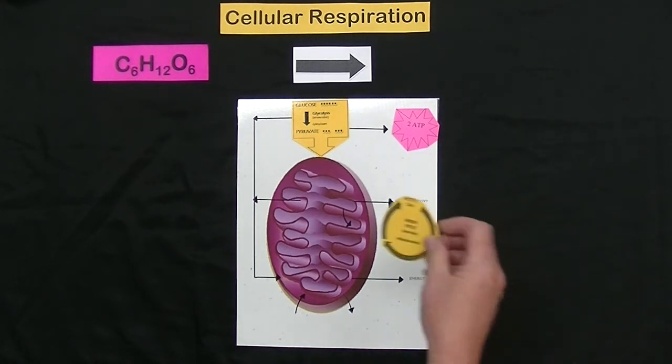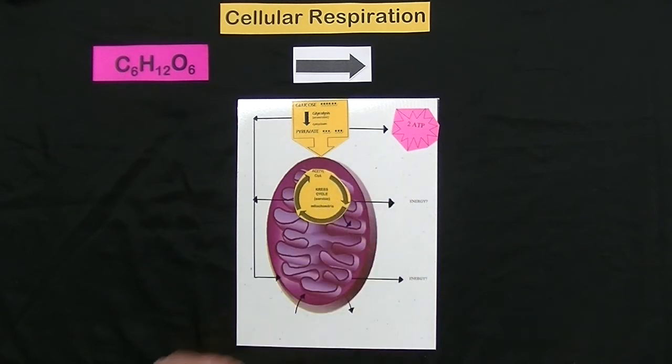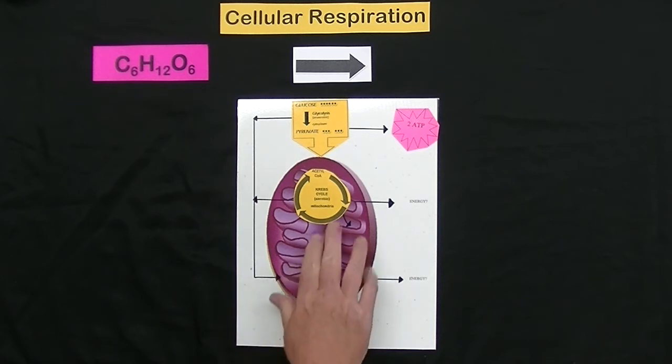The pyruvate then enters the mitochondrion. The mitochondrion is found in all cells and this is the actual powerhouse of the cell where respiration occurs.